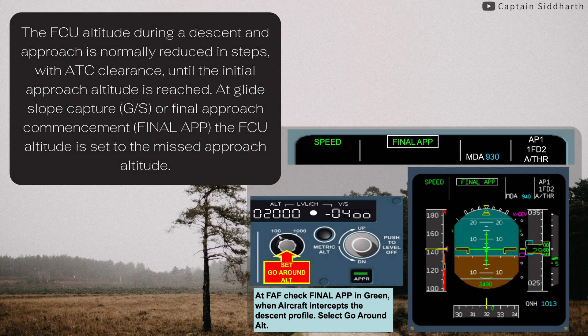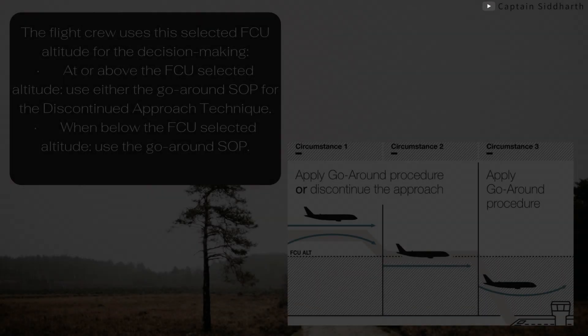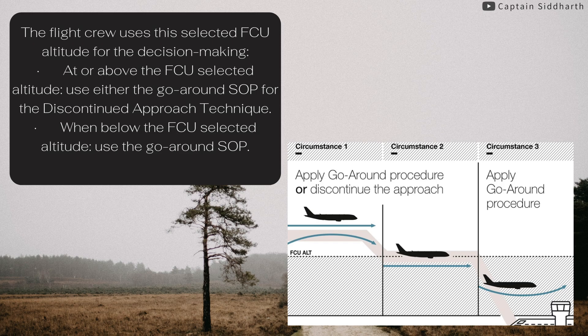The FCU altitude during a descent in approach is normally reduced in steps, with ATC clearance, until the initial approach altitude is reached. At glide slope capture or final approach commencement, the FCU altitude is set to the missed approach altitude. The flight crew uses this selected FCU altitude for decision-making. At or above the FCU selected altitude, use either the go-around SOP or the discontinued approach technique; when below the FCU selected altitude, use the go-around SOP.